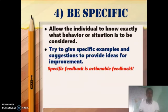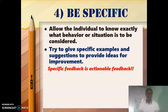Tip four is about being specific. Constructive criticism has to be specific. Allow the individual to know what kind of behavior needs to be changed and what's going wrong. Do this by giving specific examples and suggestions to provide ideas for improvement. Don't give general criticism — break down your feedback into key pointers, then provide the person with specific examples and suggestions for how they can improve. Specific feedback is actionable feedback.